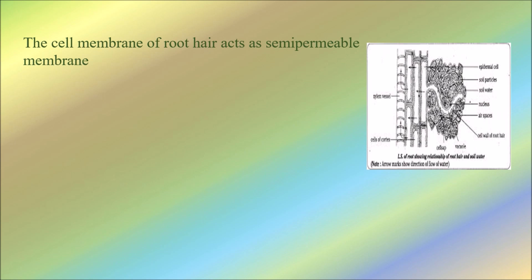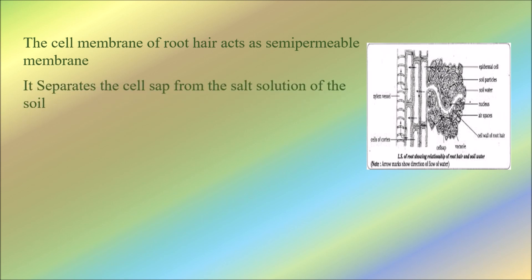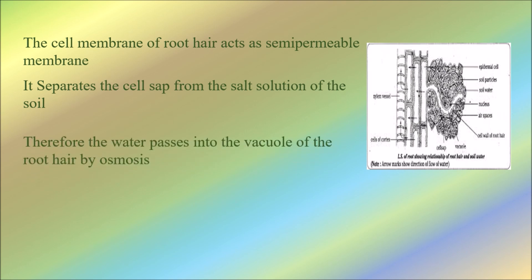The cell membrane of the root hair acts as a semipermeable membrane, which allows only certain particles to pass through it. It separates the cell sap from the salt solution of the soil.